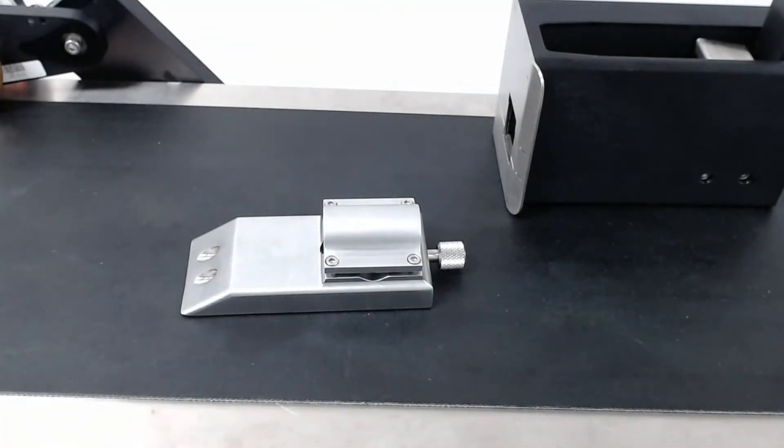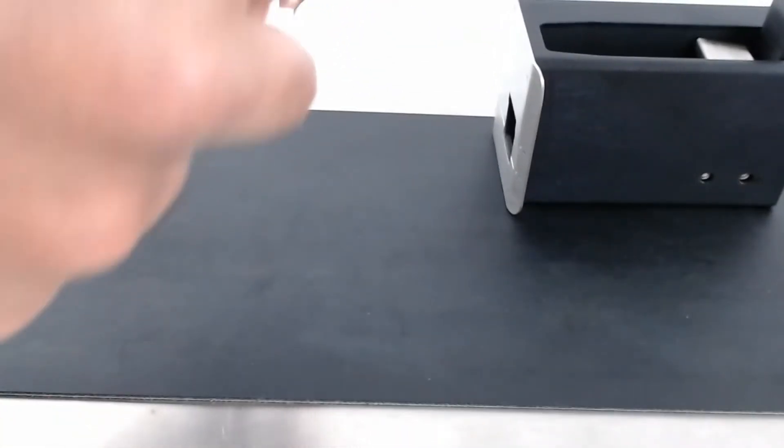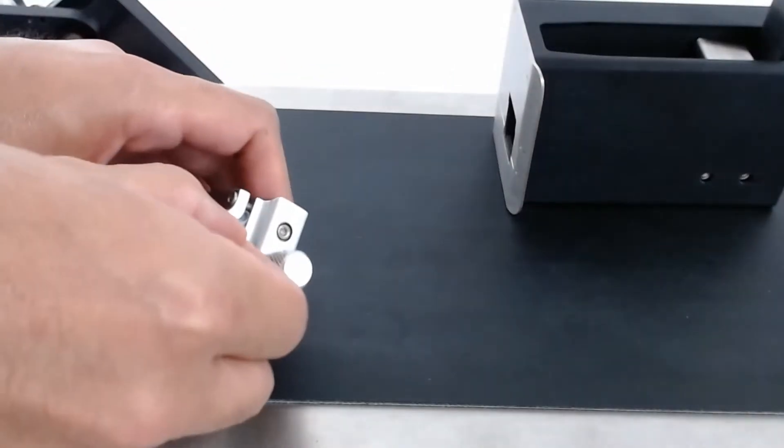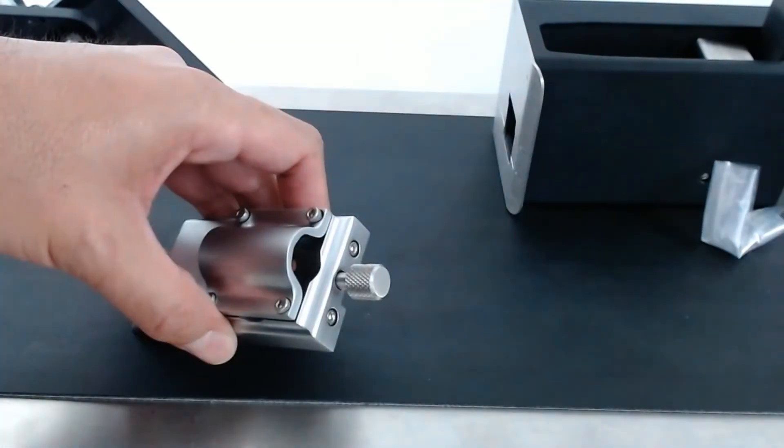Great, so when you take the fine-tuning module out of the box or out of its bag, it'll be like this. Inside here you'll see a little baggy. There's a couple screws in here. Let's go ahead and take those out and just set them to the side.